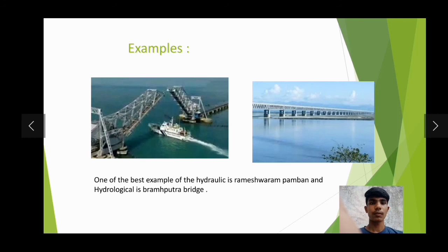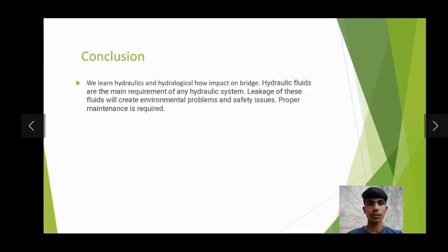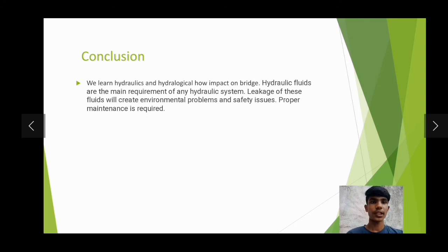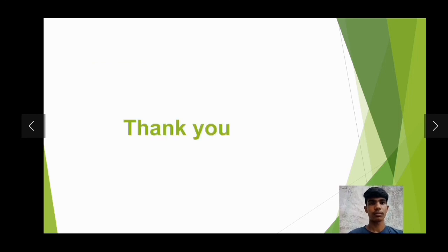Examples: One of the best examples of hydraulics is the Rameshwaram Pamban Bridge, and of hydrology is the Brahmaputra Bridge. Conclusion: We learned how hydraulics and hydrology impact bridges. Hydraulic fluid is the main requirement of any hydraulic system, and leakage of this fluid will create environmental problems and safety issues. Proper maintenance is required. Thank you.